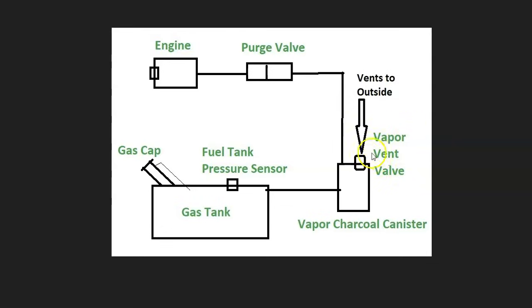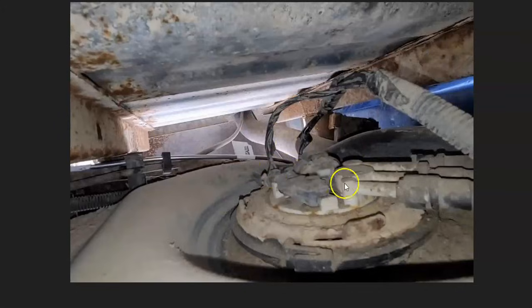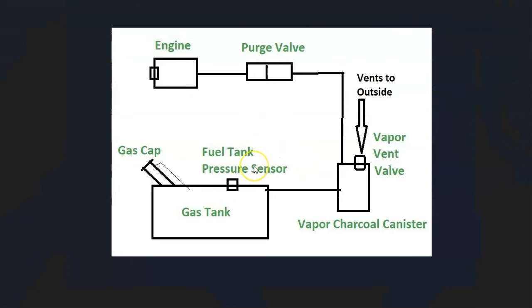If the gas cap, vent valve, and charcoal canister all check out, the next possible causes are a leak somewhere in the EVAP hoses or a bad fuel tank pressure sensor. If the fuel tank pressure sensor goes bad, there may not actually be a problem in the system, but the onboard computer thinks there is because the sensor is sending bad data. The fuel tank pressure sensor location varies — on a 2008 Chevy Cobalt it's on the charcoal canister, while on a 2002 Chevy Suburban it's on the fuel pump on top of the gas tank.